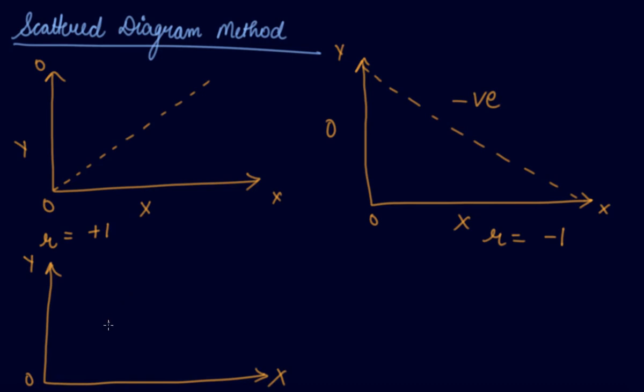This is the line. You get the points near to this line, which means the positive correlation.